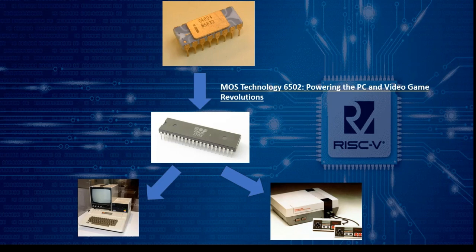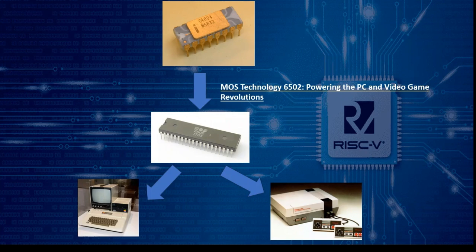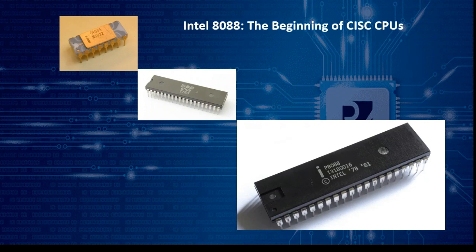The rise of personal computing: the Intel 4004 paved the way for even more powerful and affordable CPUs, like MOS Technology's 6502. This chip was a driving force behind the personal computer and video game boom, powering iconic devices like the Apple II and the Nintendo Entertainment System.